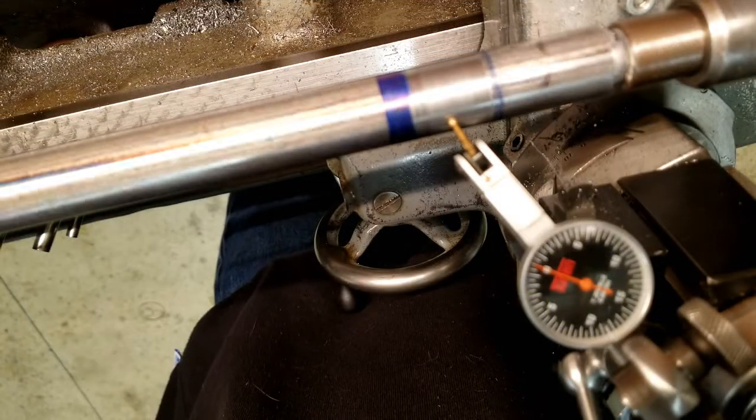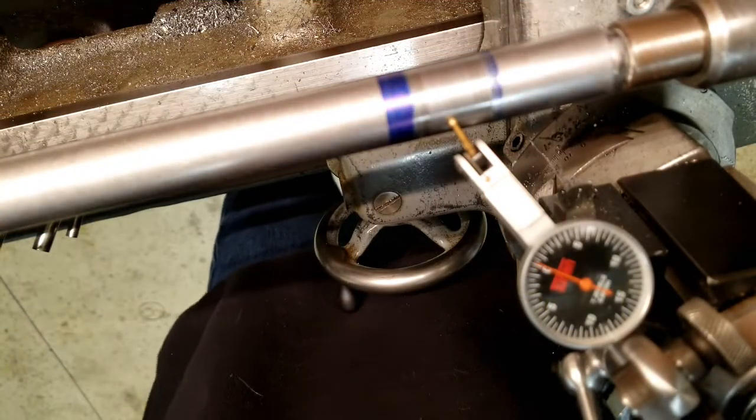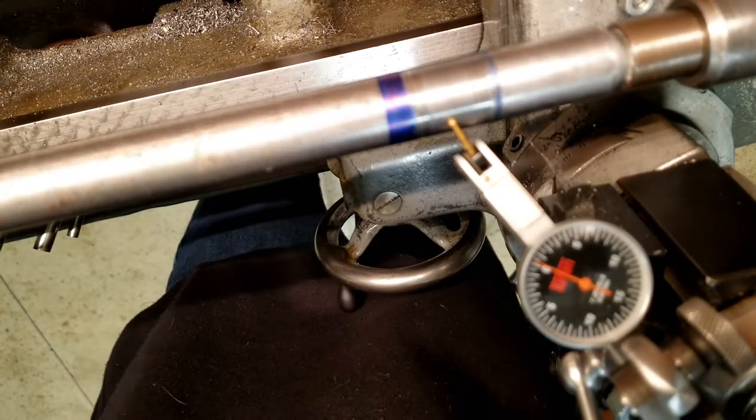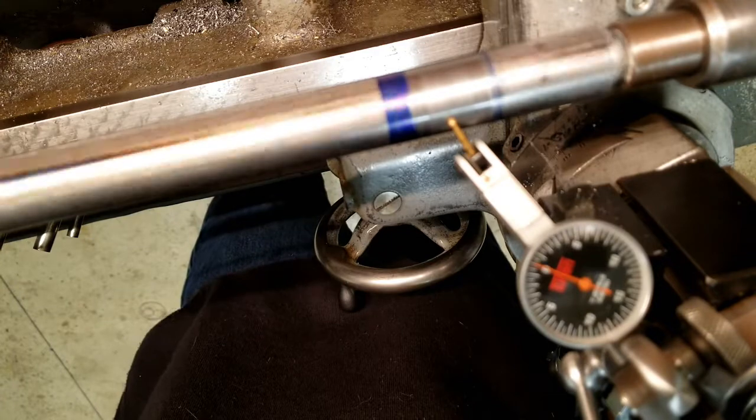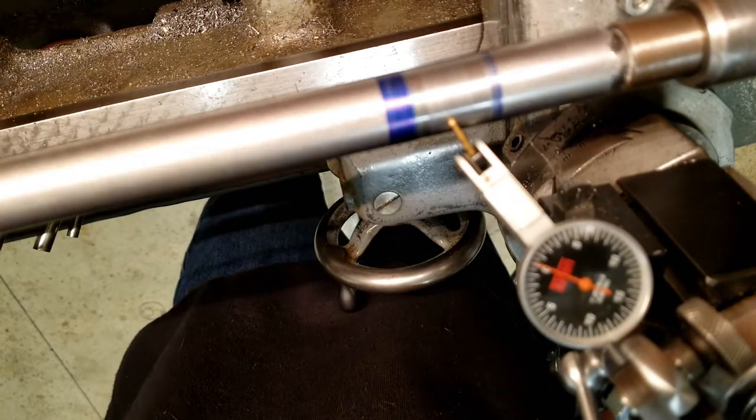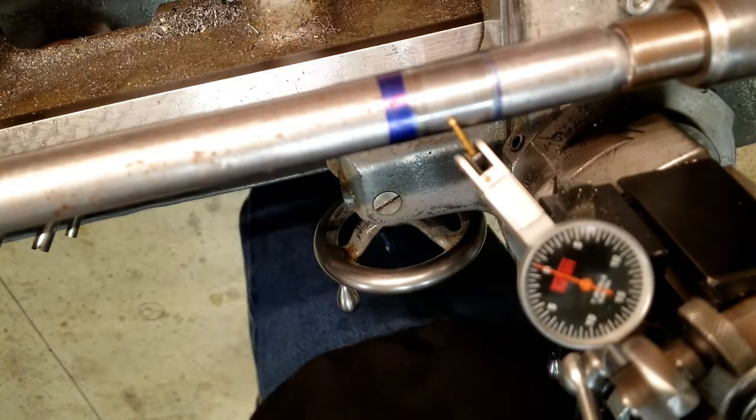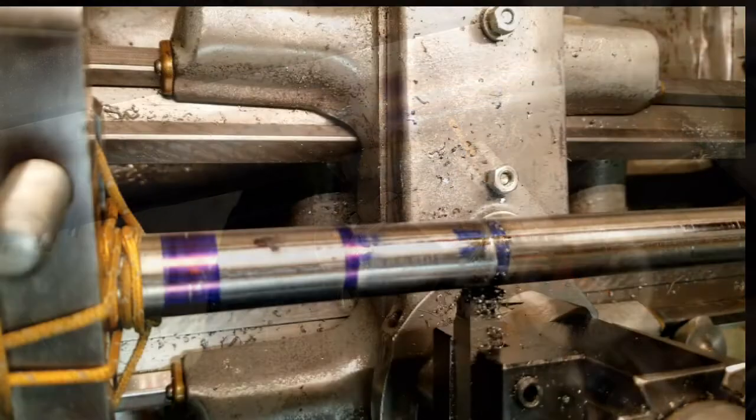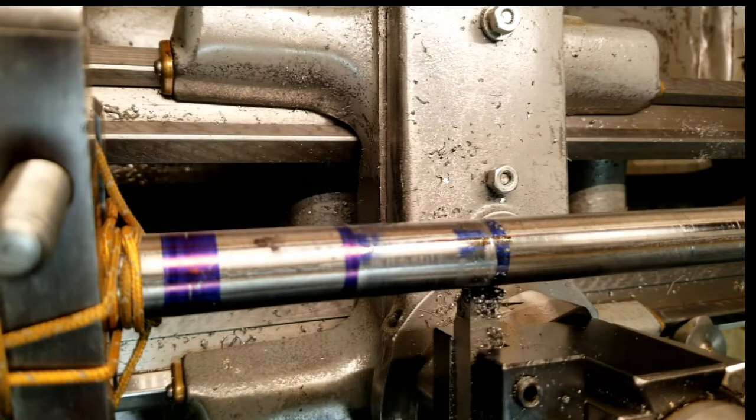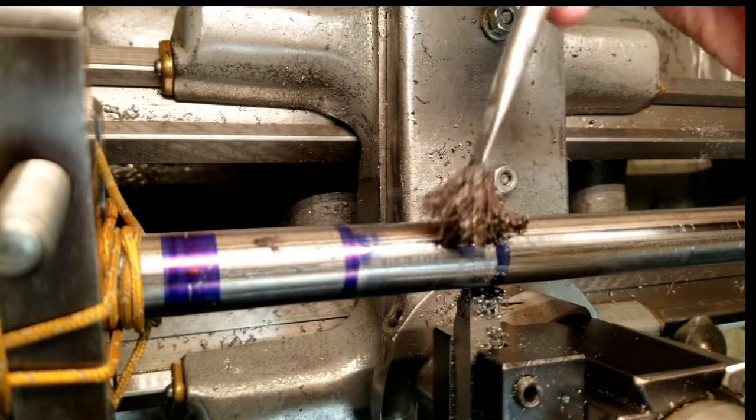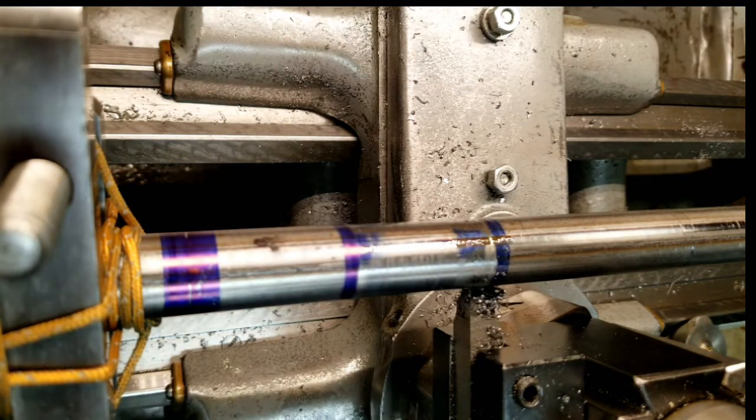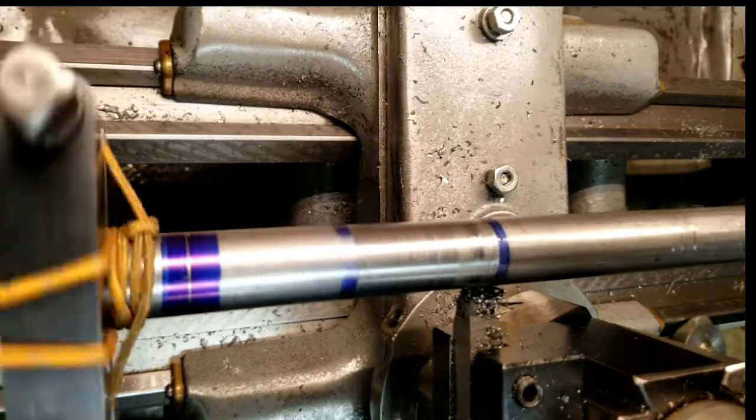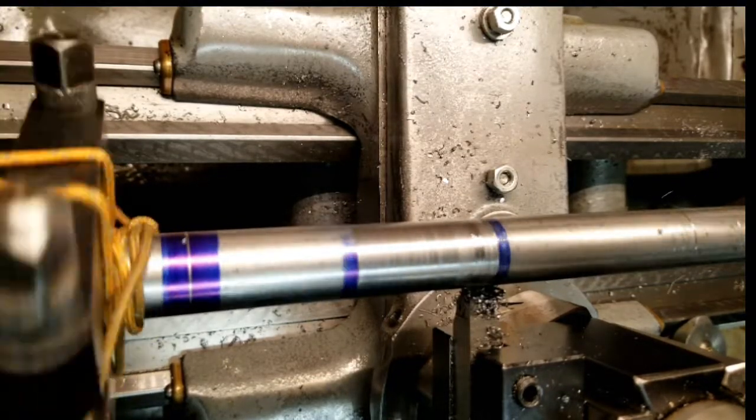Now this outside doesn't have to run true for the use as a collet puller, but it does have to run true for the machining operations that are going to be coming up here. So that ball, the cone that's running with that ball, is now very true to that bearing surface.